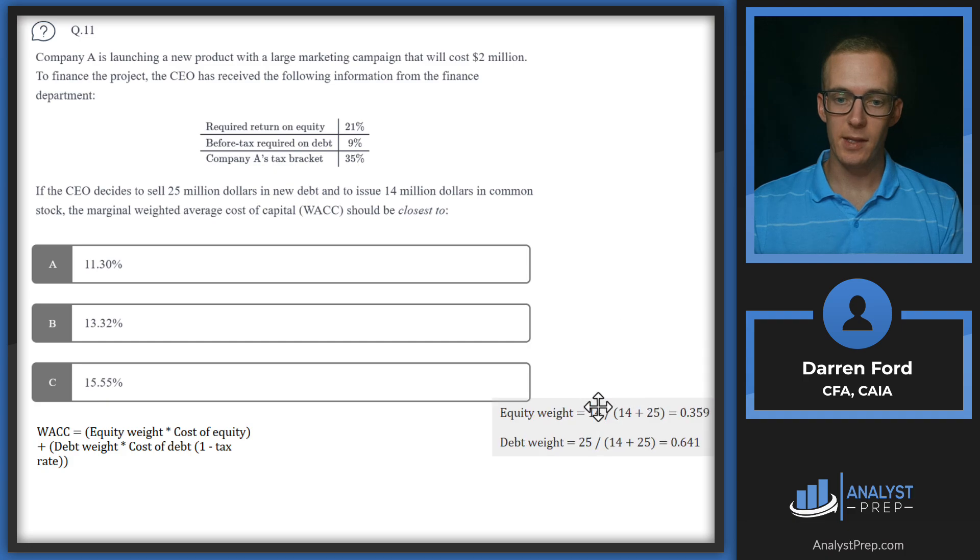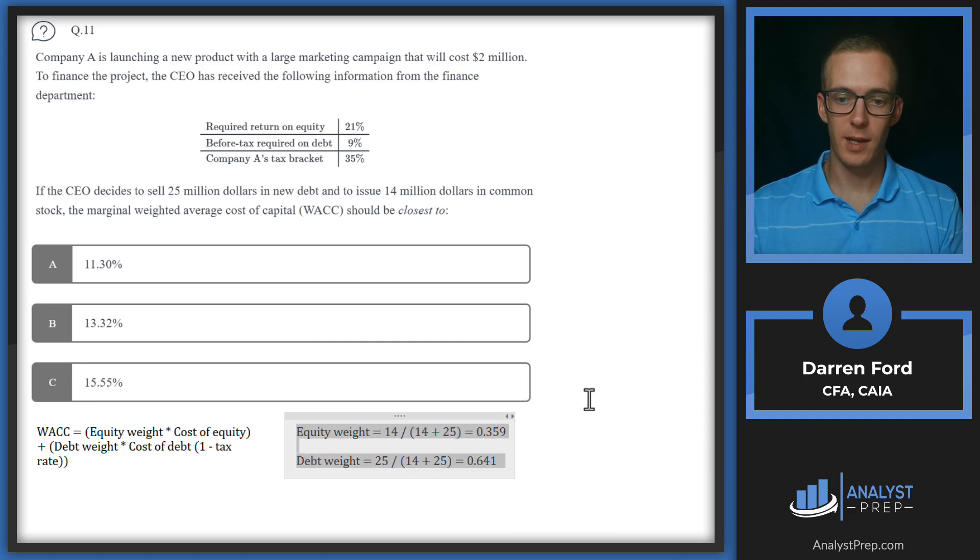To get those weights, for equity we're taking 14, which is the new issue, and divide that by 14 plus 25, which is the total amount of capital we need, gives us 0.359. The inverse of that should be the debt, which works out to 0.641.